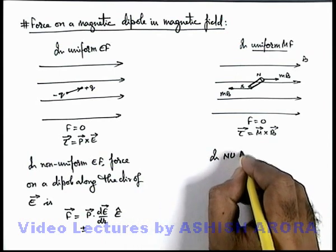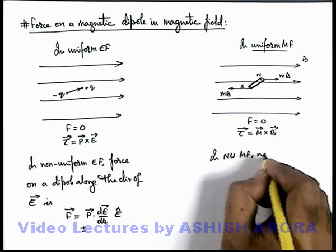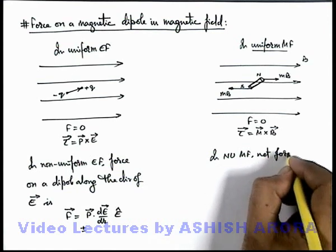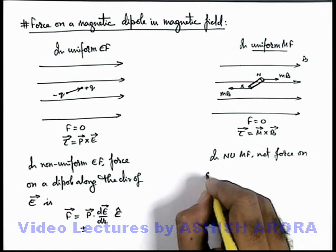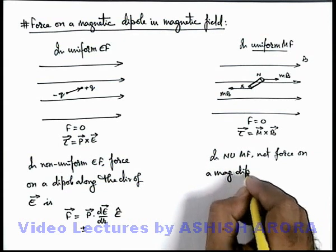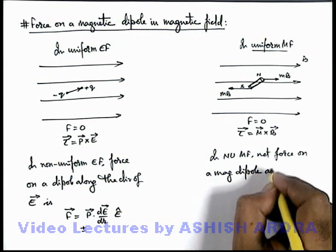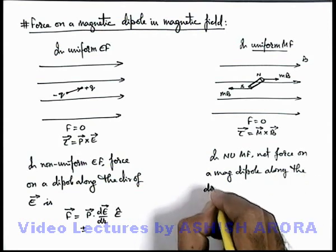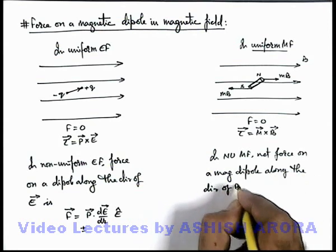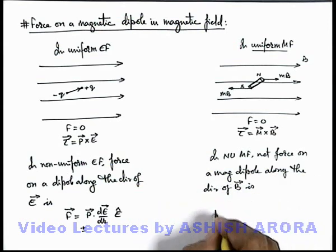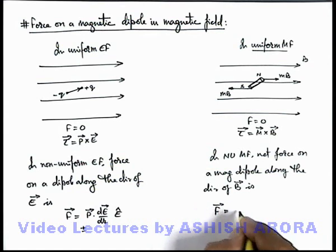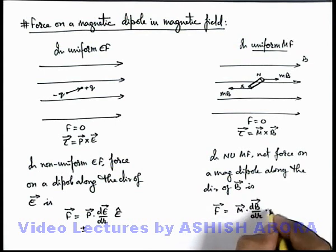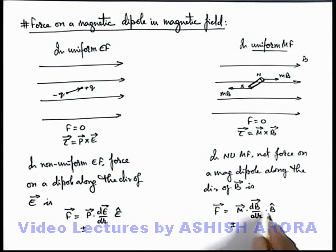in non-uniform magnetic field, net force on a magnetic dipole along the direction of magnetic induction vector is - this can be given as F vector equals M dot dB by dr, b-cap. And it can be positive or negative